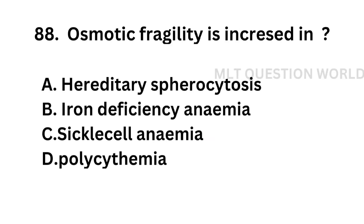Question number 88. Osmotic fragility is increased in: Option A: Hereditary spherocytosis. Option B: Iron deficiency anemia. Option C: Sickle cell anemia. Option D: Polycythemia.